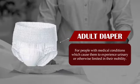The second specification is adult diaper. It is for people with medical conditions which cause them to experience urinary or other risks limited in their mobility.